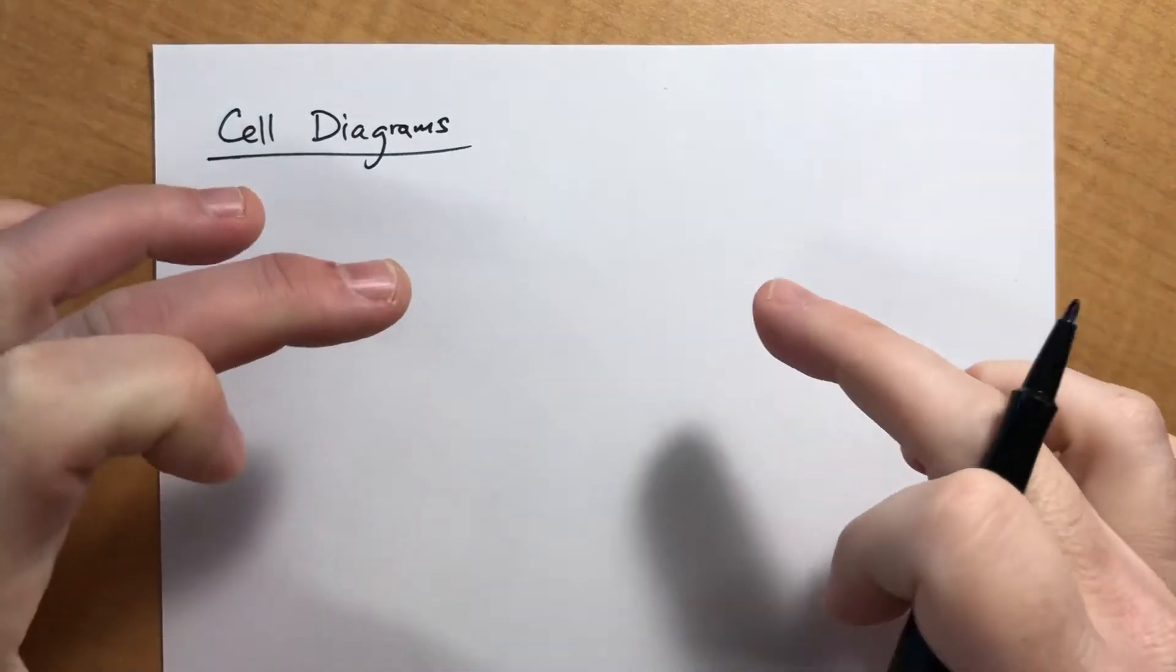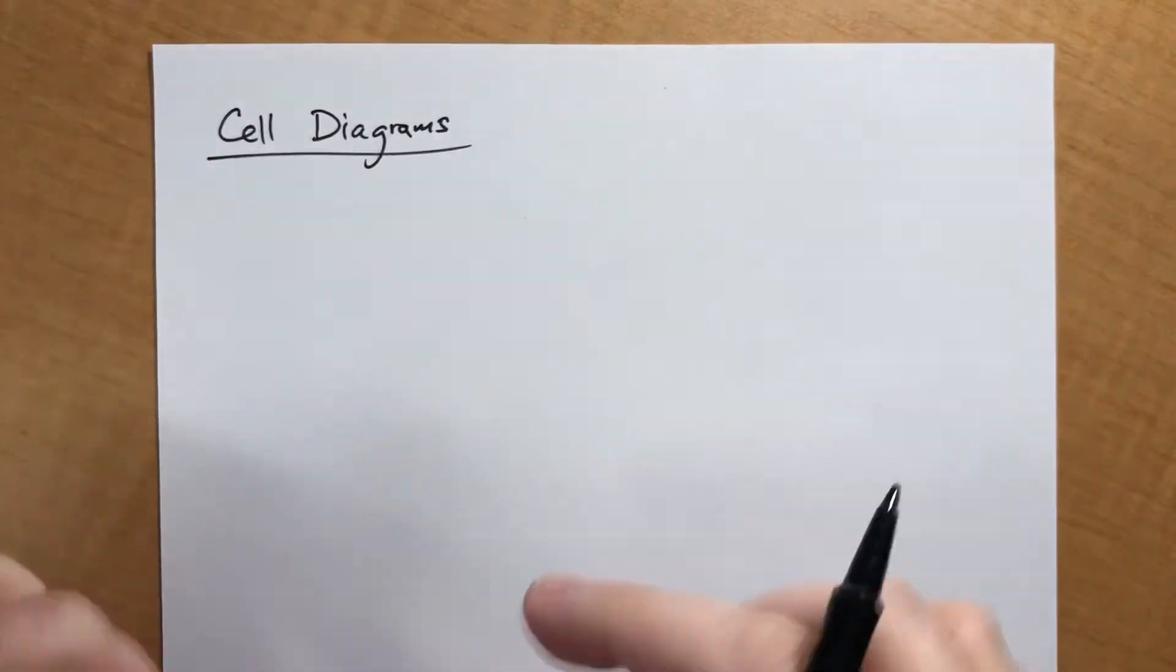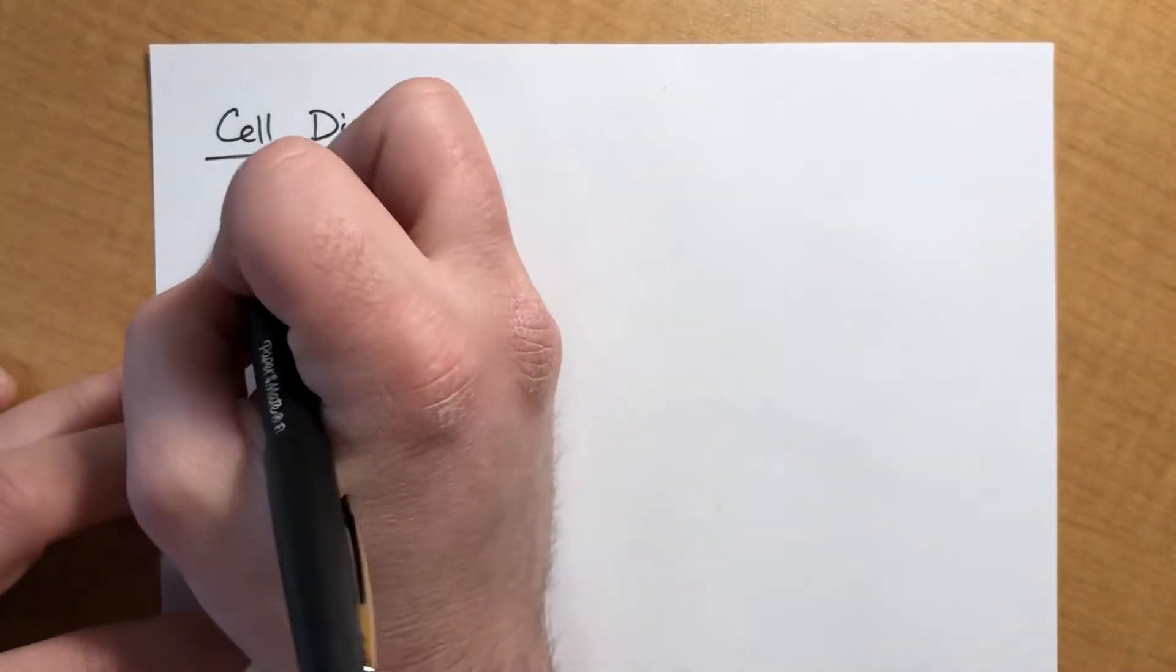Alright, in the last video we looked at voltaic cells, and we drew the picture of the two beakers with the wires and the salt bridge and all that stuff. I will tell you that that takes a lot of work, and most people aren't great at drawing things, so we're going to simplify this. There is a shortened simplified version of how to draw this, and these are called cell diagrams. Here's the general gist of how we do this.